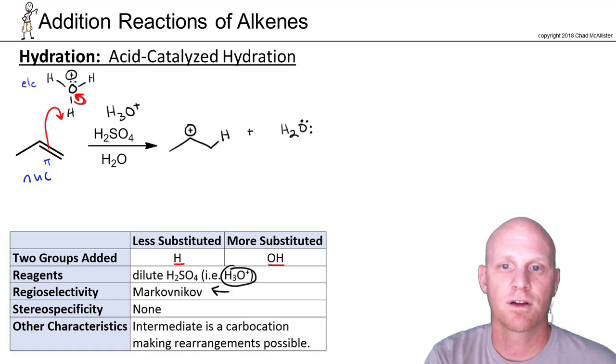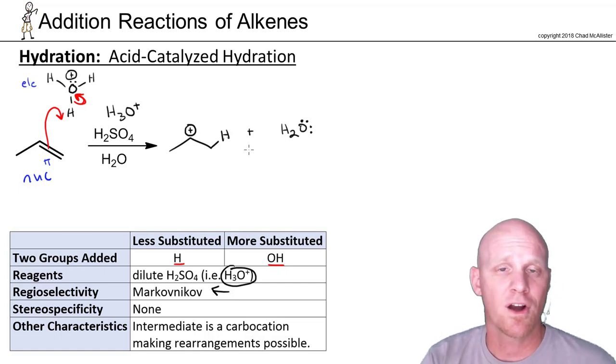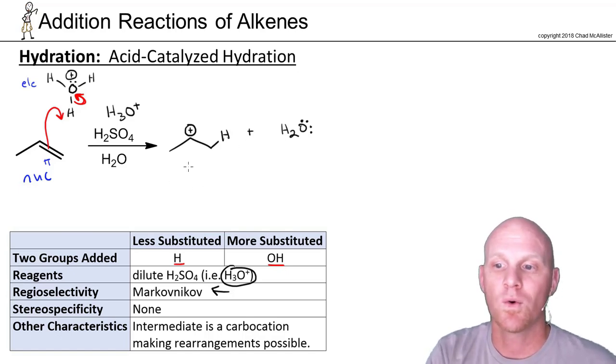So in this case, if we look at our species now, we've got a carbocation, the same one we had earlier. It's not going to rearrange again. But if I said, is there anybody who's particularly electron-rich or particularly electron-poor? Well, you might recognize that the carbocation is electron-poor, so he is our electrophile, and that leaves water here to be the nucleophile.